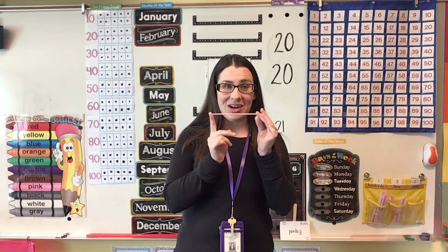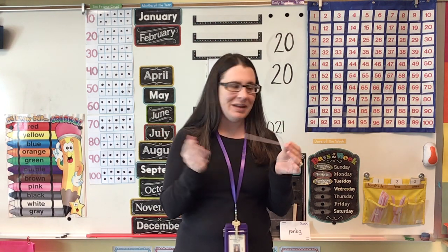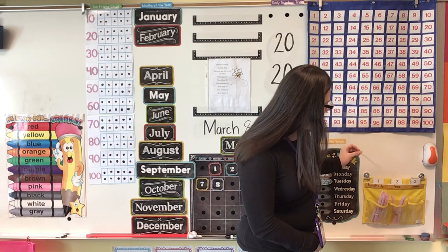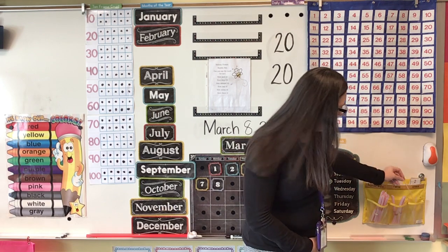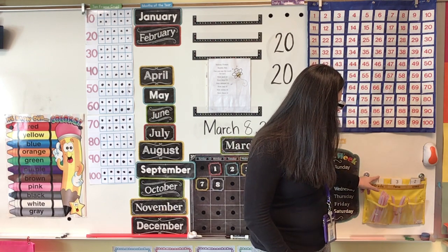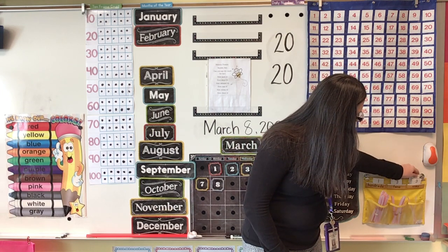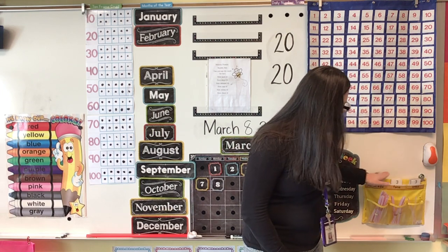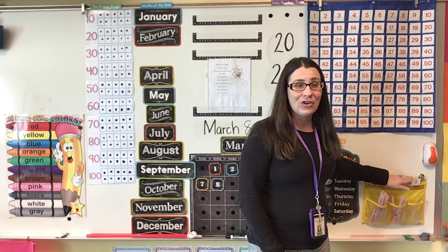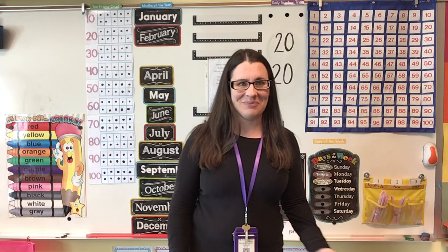We're going to add one straw today to see how many days we've been in school. I'm going to put it right here in the ones pocket. One, two, three — and this needs to change to a three. One hundred thirty-three days in kindergarten.